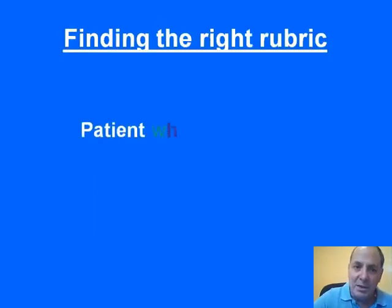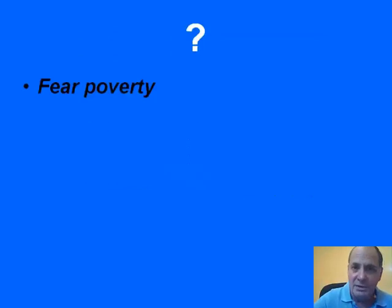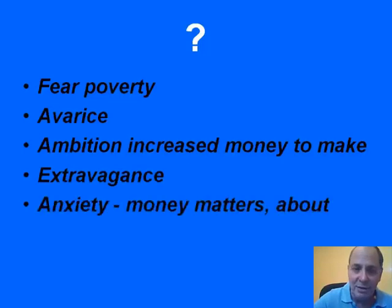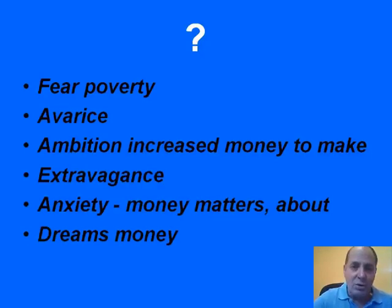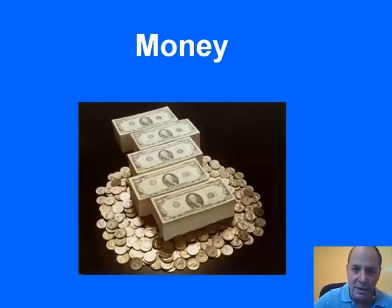Let's take another example. Here we have a patient who loves money, worries about not having any, and spends too much — a money-orientated, materialistic patient. There are many rubrics that fit the bill: fear of poverty, avarice, ambition increased to make money, extravagance, anxiety about money matters, dreams about money. So which do we take? There are many, many more. I created one big rubric to contain all the remedies that have anything to do with money in any way or form, so that you can easily use this rubric to cover that kind of patient.